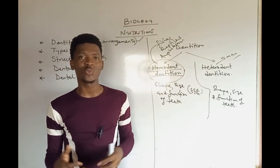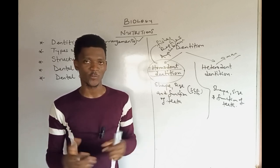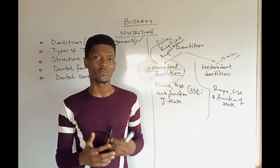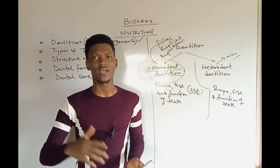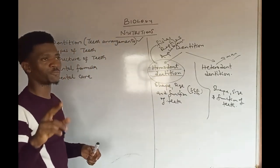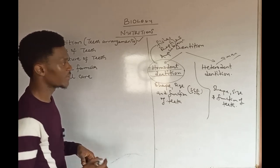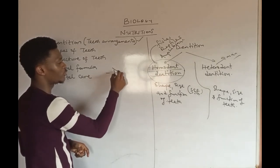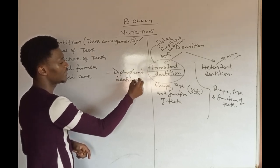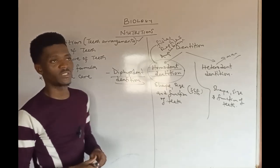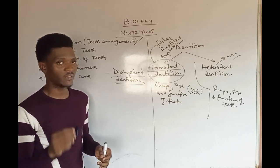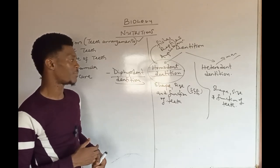Man is known to have two sets of teeth throughout its lifetime. Talking about the first set and the second set: we have milk teeth, also called temporary teeth or deciduous teeth, and then we have the permanent teeth. Since there are two different sets of teeth — a succession of teeth — in man there is what is called diphyodont dentition, which is a kind of dentition in which organisms possess two sets of teeth throughout their lifespan.